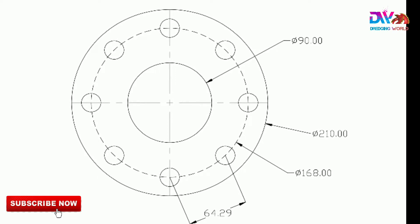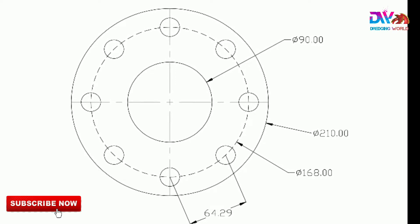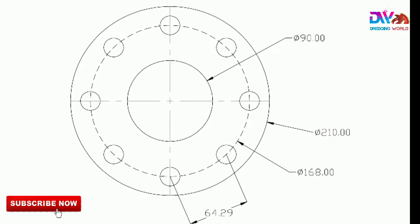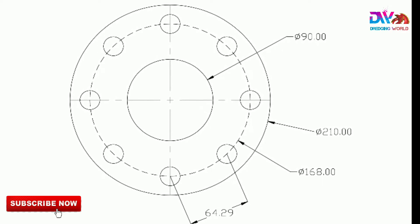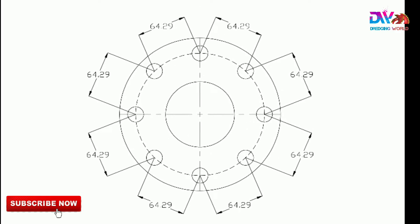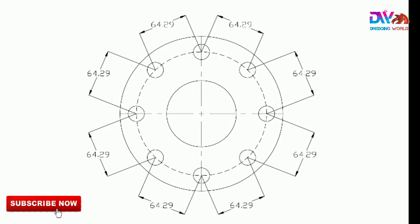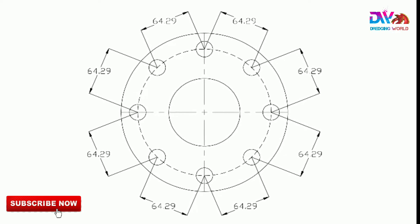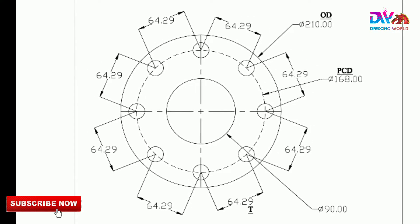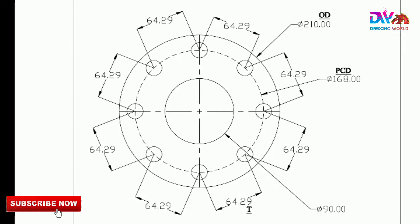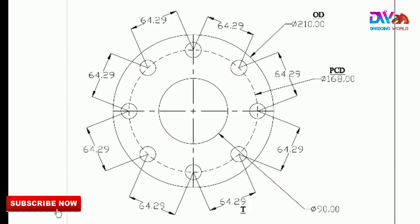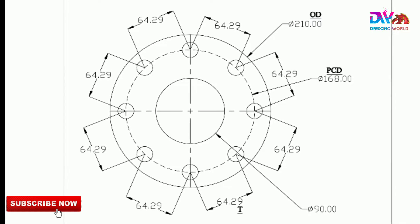From the drawing, you can see: OD is 210mm, ID is 90mm, PCD is 168mm, and the collar length is 64.29mm. All the collar lengths are the same — 64.29mm. We will now calculate this on paper to confirm that the collar length is exactly 64.29mm.